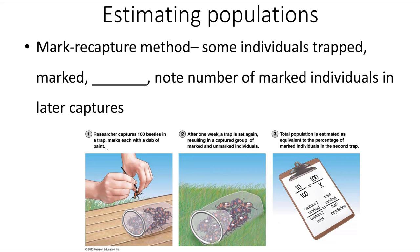Another technique ecologists use is the mark and recapture method, where a scientist sets out a trap to catch individuals in the population without harming them. They're collected, then marked — tagged or painted — so the researcher knows that individual had been caught previously. Those marked individuals are released back into the population, and then the trapping technique is used again later. The researcher notes how many individuals trapped a second time had been marked, and through that relationship can determine the relative size of the population.